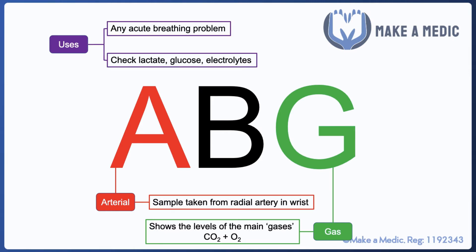The uses of an ABG or a venous blood gas can be split into two main groups. The first is if there is any sort of acute breathing problem and you want to assess the ability of our gas exchange interface to exchange gases. The second group regards the other information you can get from a blood gas, even though the term arterial blood gas suggests the focus is on carbon dioxide and oxygen.